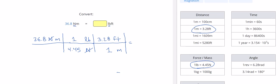All right, let me go ahead and plug that in. So I'm going to do 36.8 times 3.28 divided by 4.45.